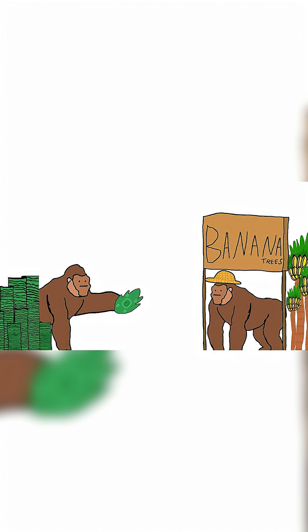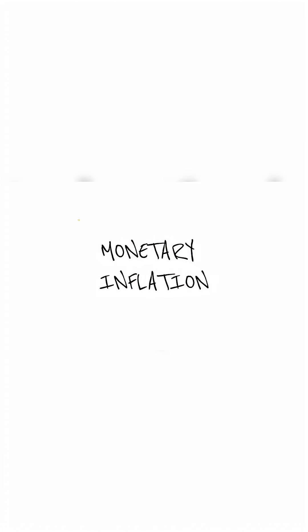If banana demand stays the same, and banana supply stays the same, but monkeys suddenly have more leaves — some money to buy bananas — banana price goes up! Because leaves are now not worth as much as before. This is called monetary inflation.